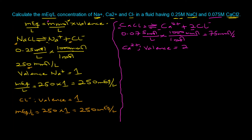For the calcium cation, the valence is two (absolute value of +2). Using the milliequivalents equation with a one-to-one ratio between CaCl₂ and Ca²⁺, the millimoles per liter of Ca²⁺ is 75. So mEq/L = 75 × 2 = 150 milliequivalents per liter.